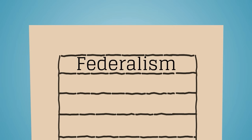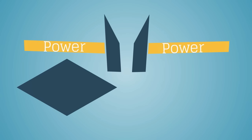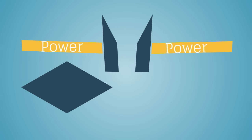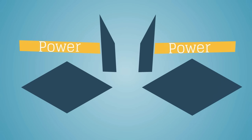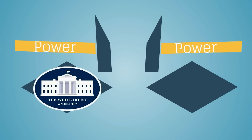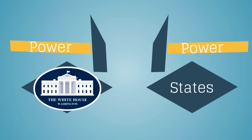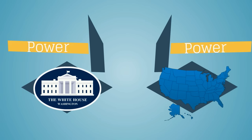Federalism was a compromise. Federalism provides some power to the national government in Washington, D.C., and other powers belong to each of the states.